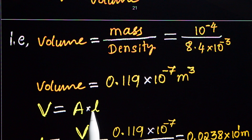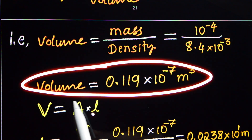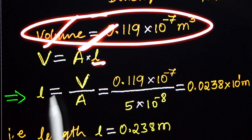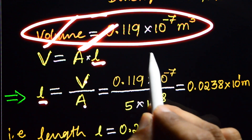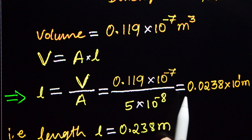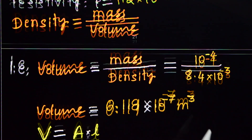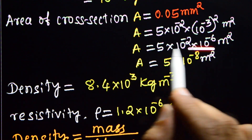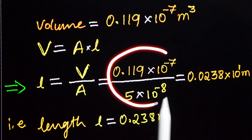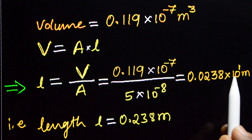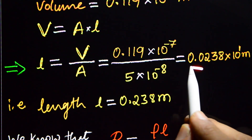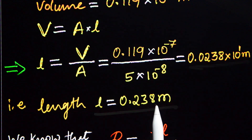Volume equals area multiplied by length. We know the volume and we know the area, so we can calculate the length. Therefore, length equals volume divided by area. Volume is 0.119 × 10 raised to minus 7, and area is 5 × 10 raised to minus 8 meter square. On simplification, we get 0.0238 × 10 raised to 1 meter, which can be written as L equals 0.238 meter.